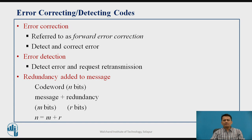When talking about error control, when you are transmitting data, the data is going over a channel. The channel itself is sometimes unreliable. So when you want to make your communication reliable over an unreliable channel, you need to have some sort of error control techniques. This error control can be done in two different ways.